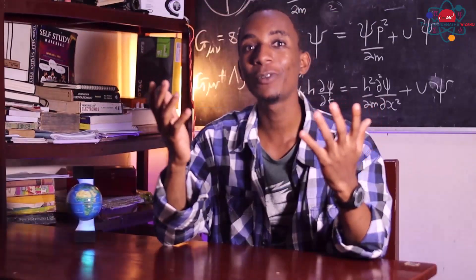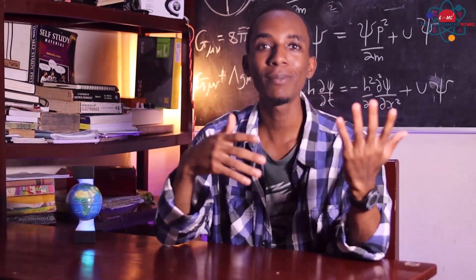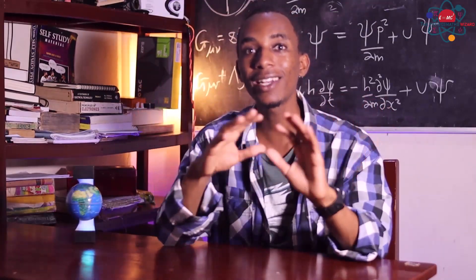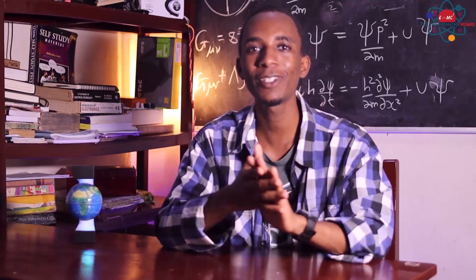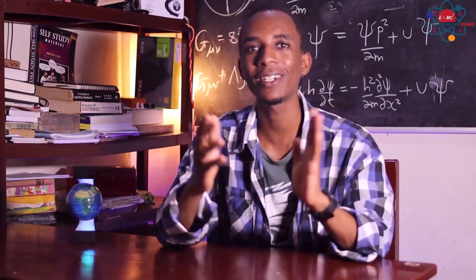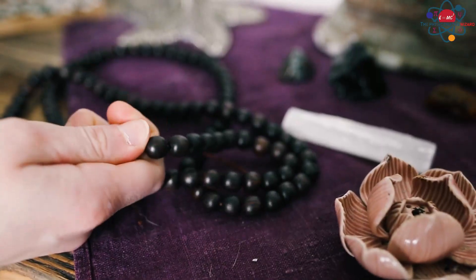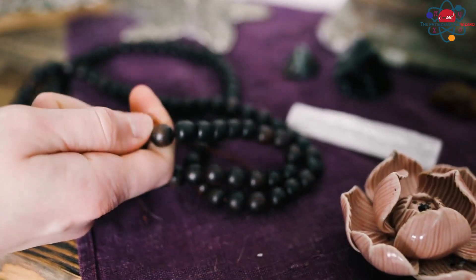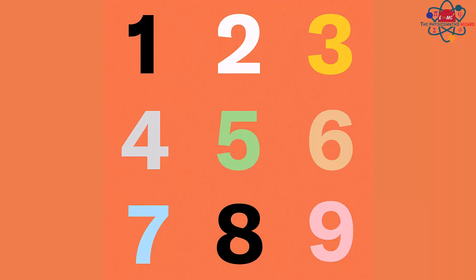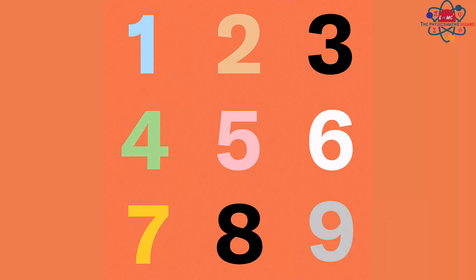In this video, I will use the words 'number types' and 'number systems' interchangeably. I understand they might be technically different, but I just couldn't find a better term. Counting numbers are just numbers starting from one, two, three, and so on.